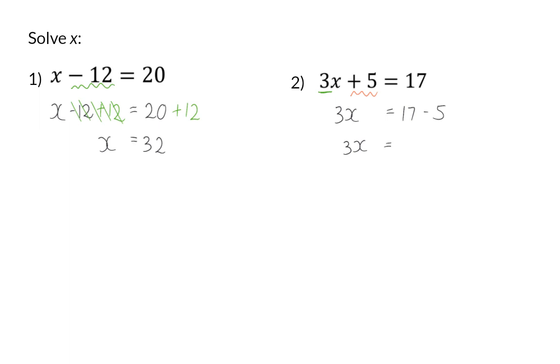So, 3x is equal to 12. Now, to get rid of the times by 3, I'm going to do the inverse operation of multiplication, which is dividing by 3. And, once again, I will divide by 3 on both sides. This means that x will be equal to 4.